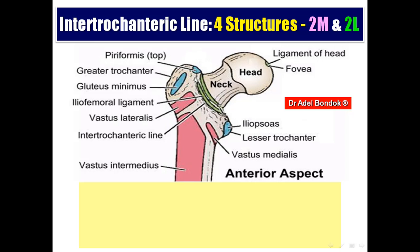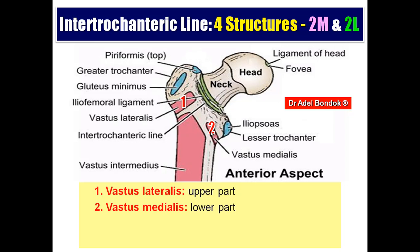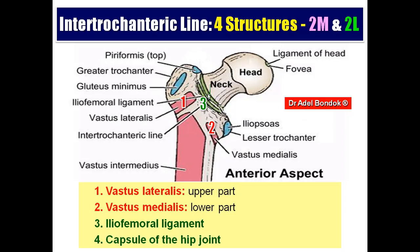The intertrochanteric line gives attachment to four structures: two muscles and two ligaments. The two muscles are vastus lateralis attached to the upper part and vastus medialis attached to the lower part. The two ligaments are the iliofemoral ligament and the capsule of the hip joint.